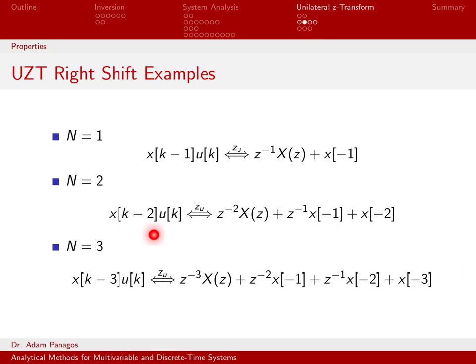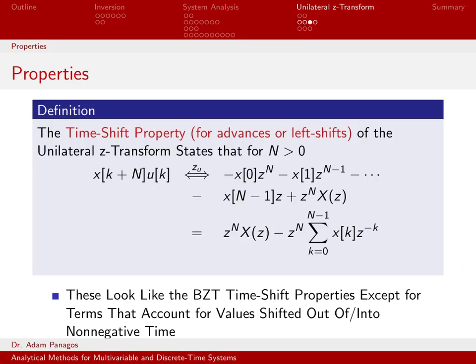This gives you the pattern for how to apply the unilateral Z-transform when you're dealing with shifted signals. Shifted signals are the types of signals we tend to deal with in difference equations, so that's why this particular property is useful. Now let's talk about left shifts. When we shift to the left, we're actually pulling things forward in time, which you can think of as a time advance.